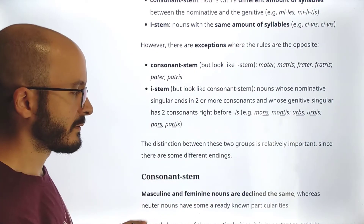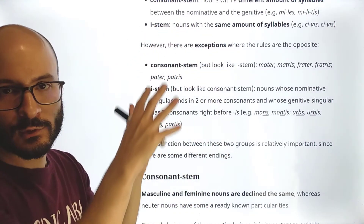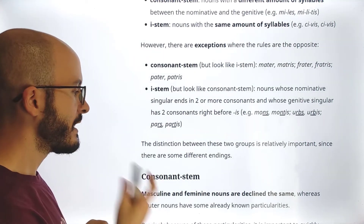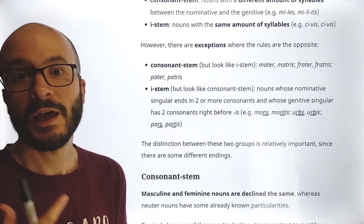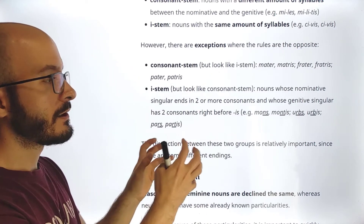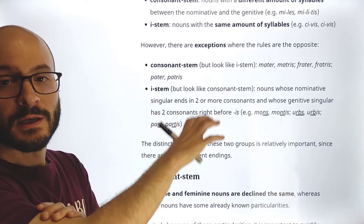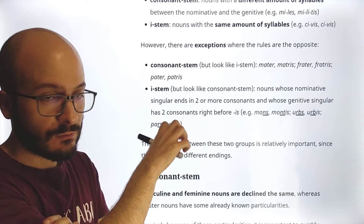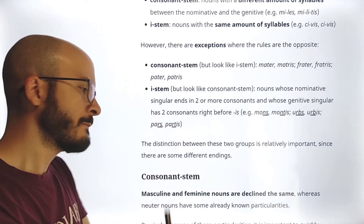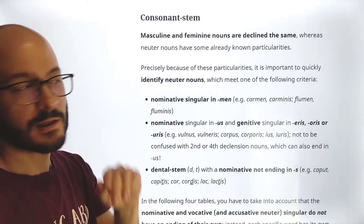Why do we care about all of this? The distinction between these two groups is relatively important since there are some different endings. Depending on whether a noun belongs to the consonant stem group or to the e-stem group, some of the endings — for example, the ablative singular — are going to be different. We are going to see this. First, we begin with the consonant stem group.